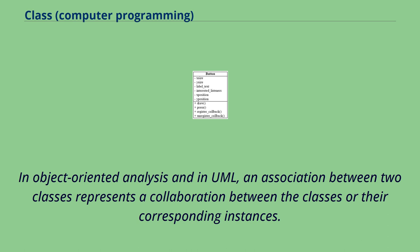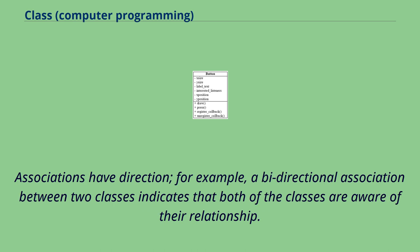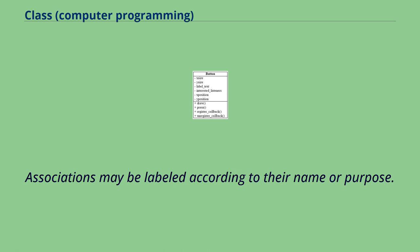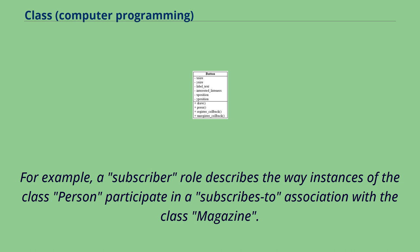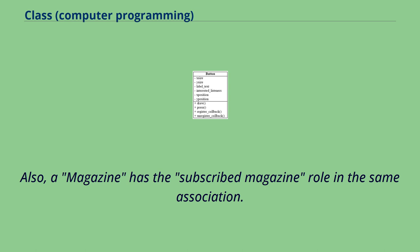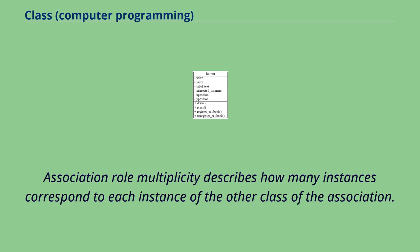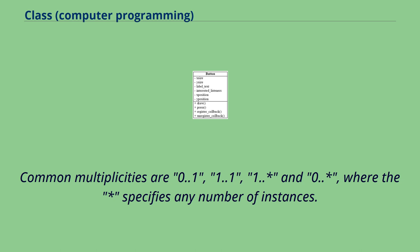In object-oriented analysis and in UML, an association between two classes represents a collaboration between the classes or their corresponding instances. Associations have direction. For example, a bidirectional association between two classes indicates that both classes are aware of their relationship. Associations may be labeled according to their name or purpose. An association role describes the role of the corresponding class — for example, a subscriber role describes the way instances of the class Person participate in a 'subscribes to' association with the class Magazine. Association role multiplicity describes how many instances correspond to each instance of the other class, with common multiplicities being 0, 1, and 1..* (any number of instances).